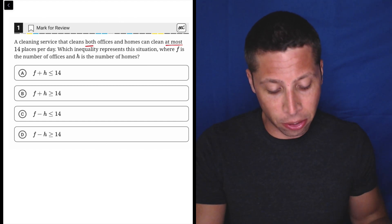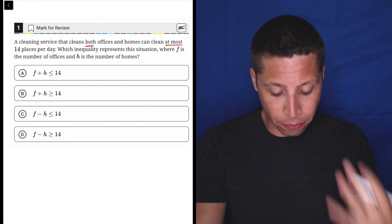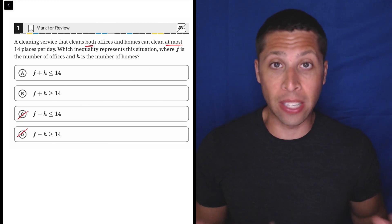Which inequality represents the situation where F is the number of offices and H is the number of homes? So this is not a complicated story. The first thing I would notice is that we are not going to use subtraction in any way. We're adding them together. It's both of these things.